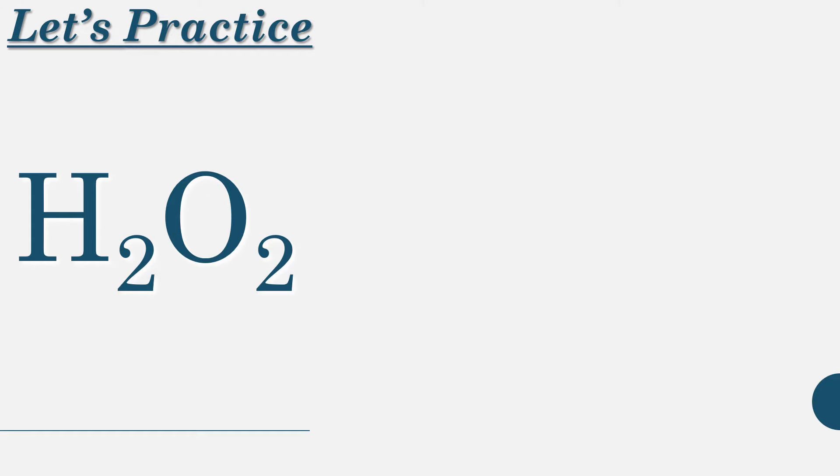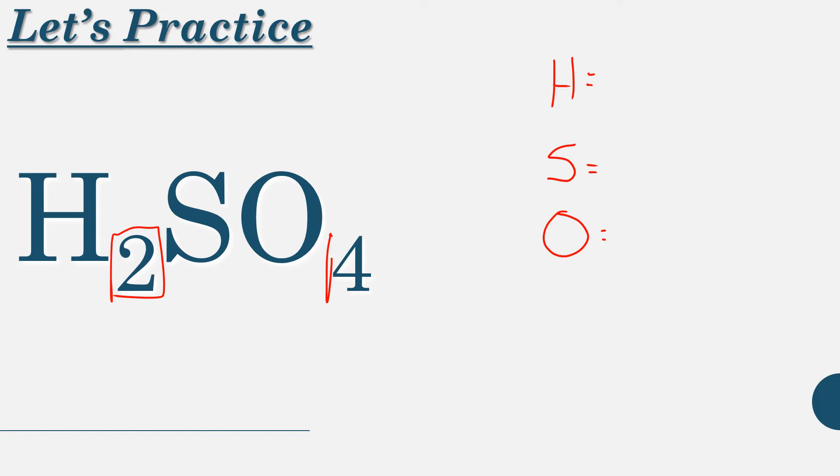Let's try another. So we have hydrogen and oxygen. Both of them have a subscript. So hydrogen is 2, oxygen is 2. We're going to practice another. So hydrogen has a subscript, oxygen has a subscript, sulfur doesn't. That's okay because we know that it should be 1 because there's not a subscript behind it. So 2, 1, 4.